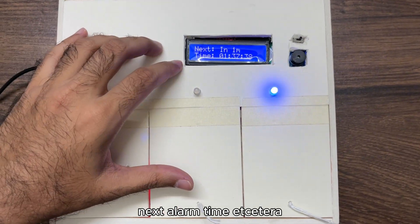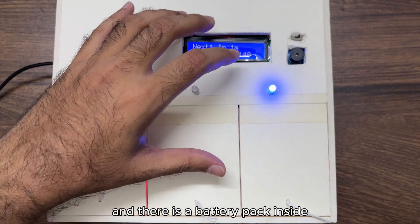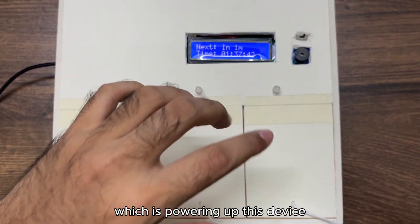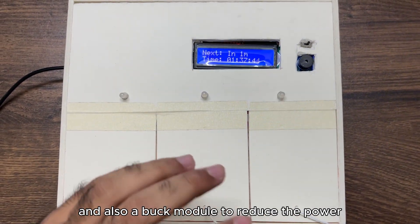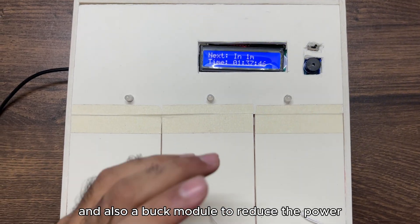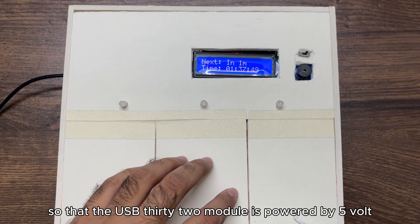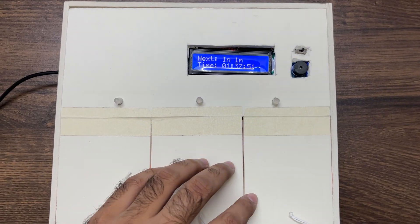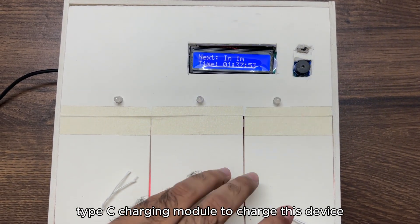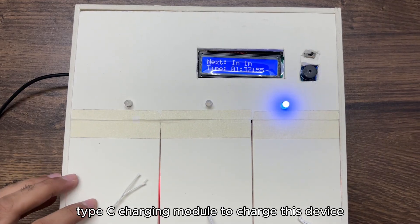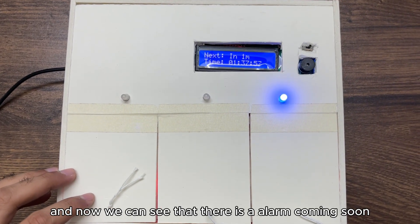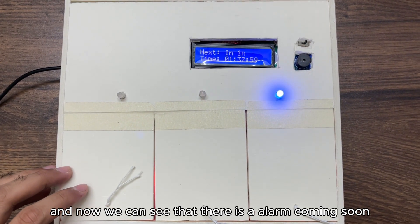There is a battery pack inside which is powering up this device, and also a buck module to reduce the power so that the ESP32 module is powered by 5 volts. There is a Type-C charging module to charge this device. Now we can see that there is an alarm coming soon.